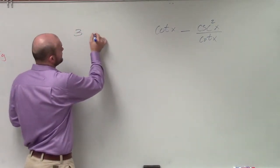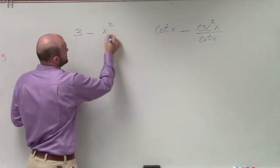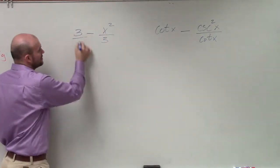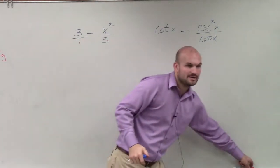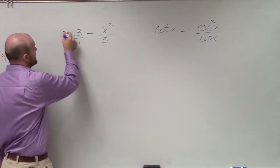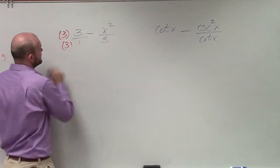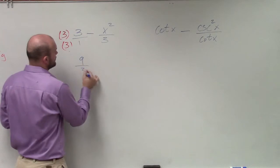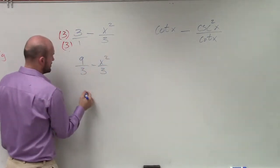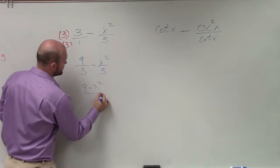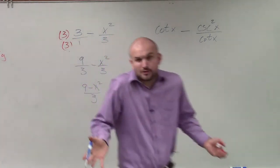If I had 3 minus x squared over 3, if I wanted to combine those, I got to make sure I have common denominators, right? So I'd have to multiply this by 3 over 3. Therefore, it'd be 9 over 3 minus x squared over 3. So therefore, it's 9 minus x squared over 3. That's how you do with numbers.